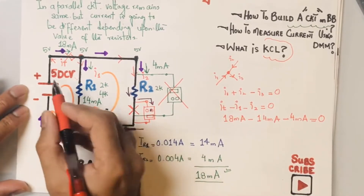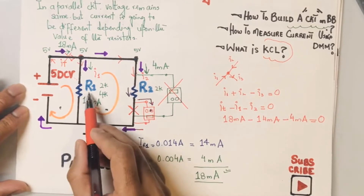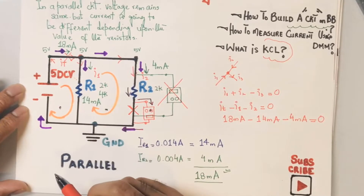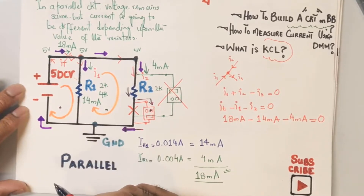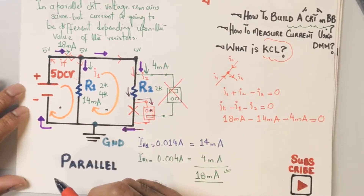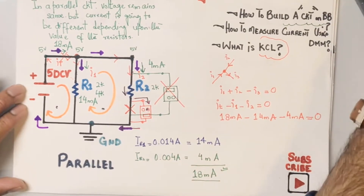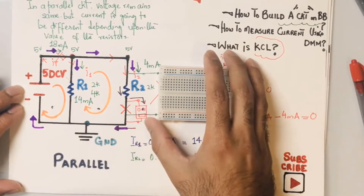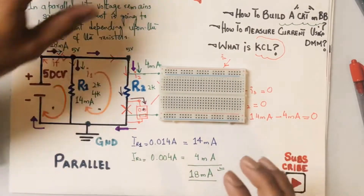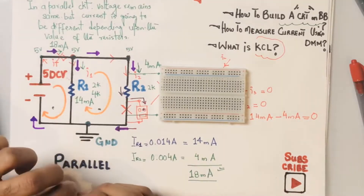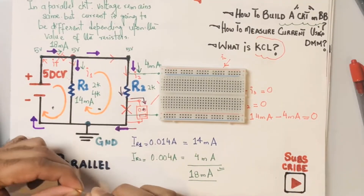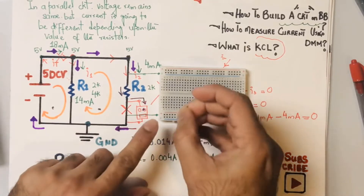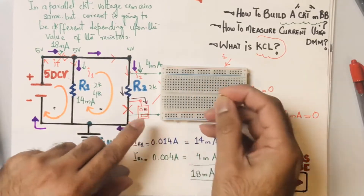In this circuit I have a five-volt power supply and two resistors of some unknown values — the specific values aren't significant here. So how do you build a parallel circuit on a breadboard? I'm going to use the second approach, which is to basically try to make the circuit just as it appears on the paper.